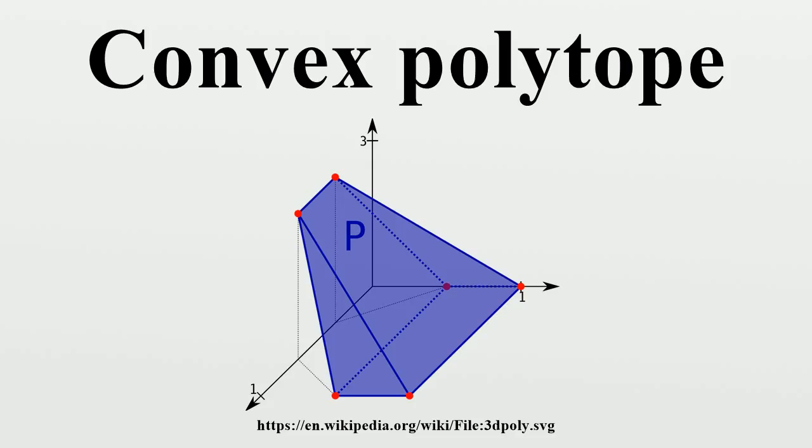Hence, each row in the matrix corresponds with a supporting hyperplane of the polytope, a hyperplane bounding a half-space that contains the polytope. If a supporting hyperplane also intersects the polytope, it is called a bounding hyperplane.